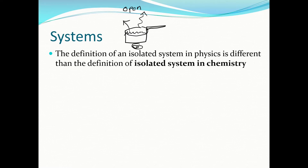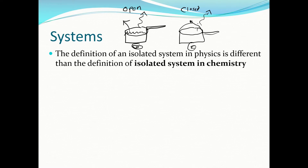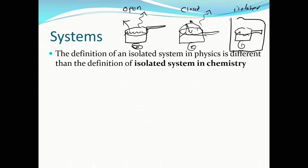To make it a closed system, you put a lid on top — energy can enter or leave, but the water molecules are trapped and stay in. An isolated system is if you take your pot of water, heat it up, then put it in an insulated container like a thermos — energy can't enter or leave because it's insulated, and matter can't enter or leave either. So matter and energy are both trapped.